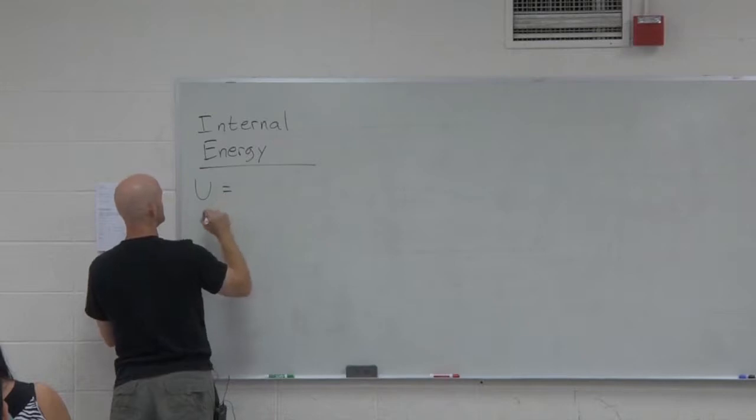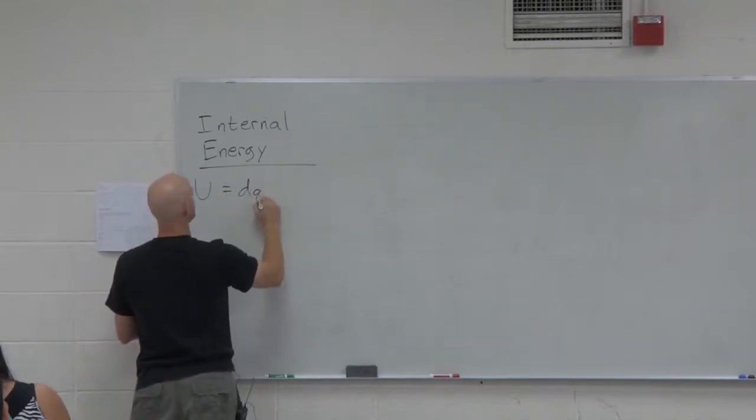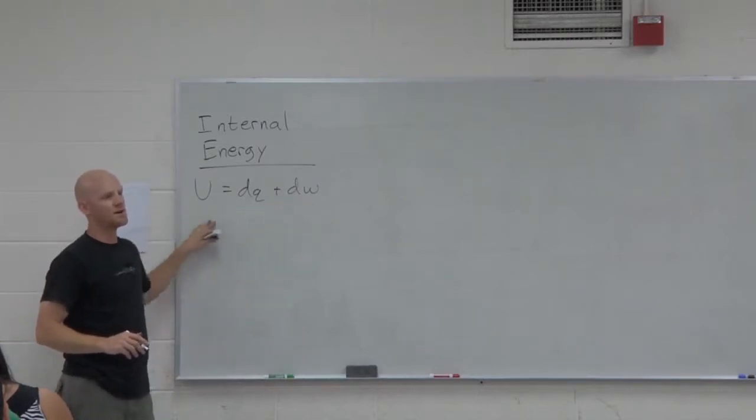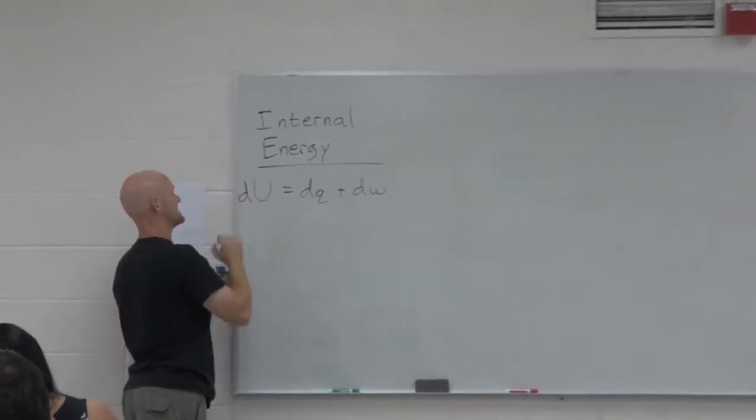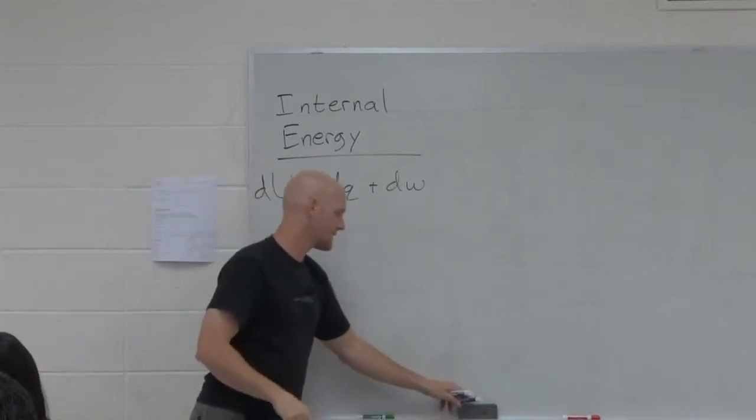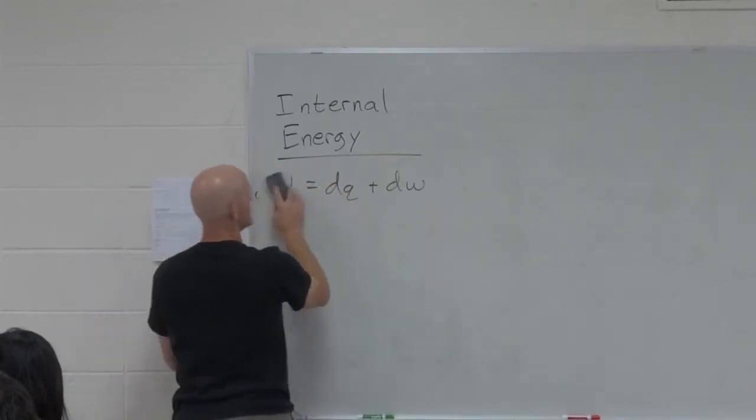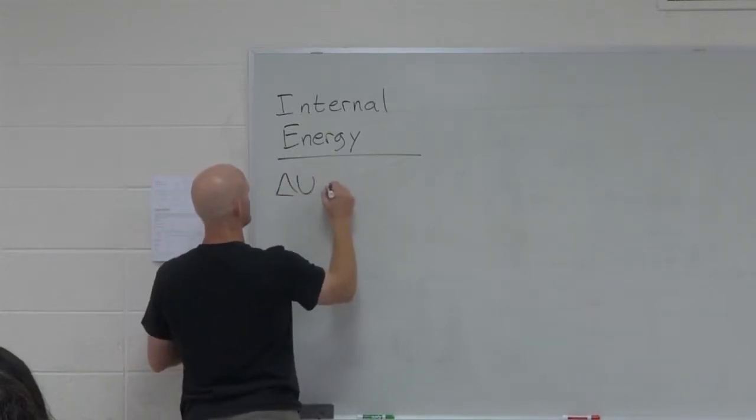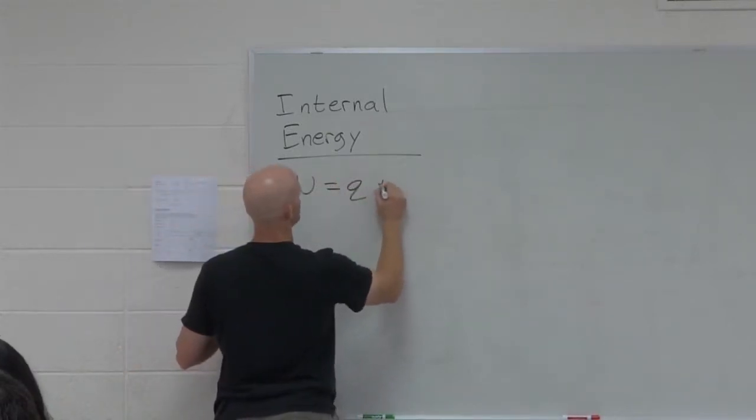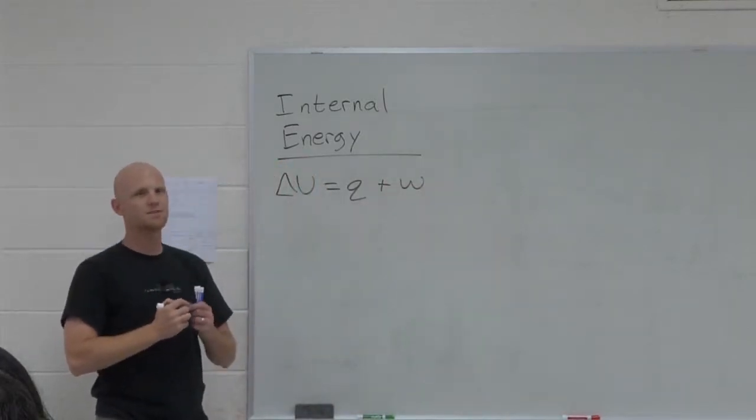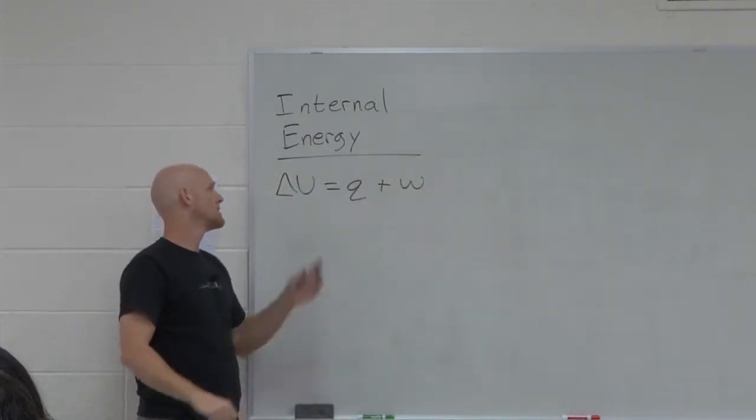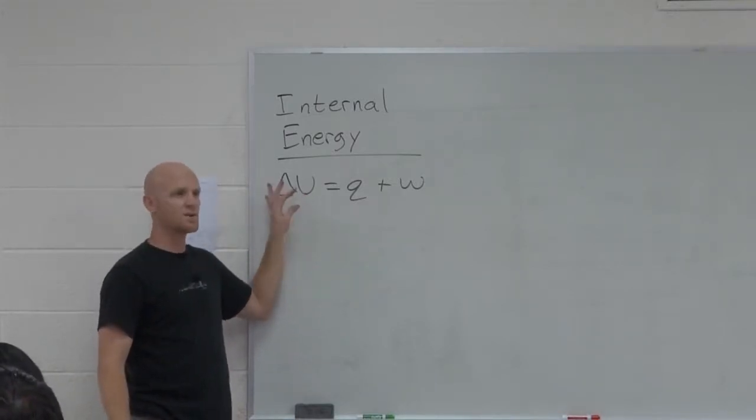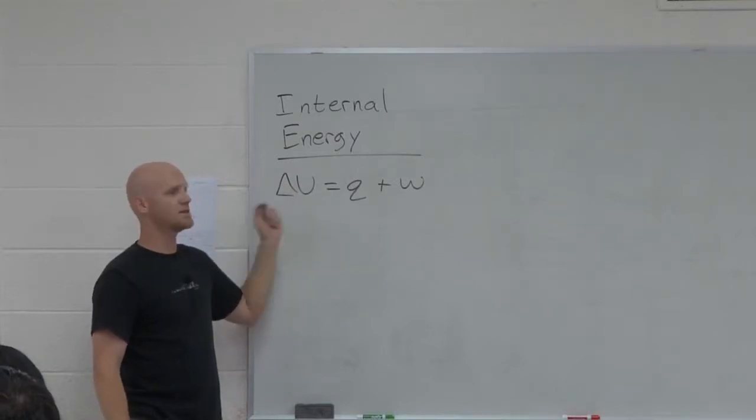So, internal energy, U. I should really put ΔU equals—you know what, I don't even want to do it that way. You're going to hate me. Sorry, guys. We're just going to do this. We'll just take it a step further because you probably don't need quite that. ΔU equals q plus w. ΔU is the change in internal energy. That's what it is. Change in internal energy of a system.